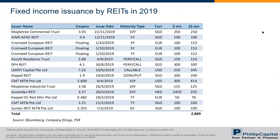REITs have also been actively refinancing their debt and issuing new perpetual securities to replace more expensive ones, such as for Ascott. Total fixed income issuance by REITs in 2019 stands at $2.8 to $2.9 billion. For the full year, via equity and fixed income instruments, REITs have raised about $7 billion.